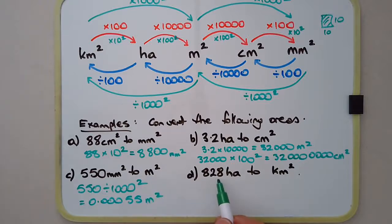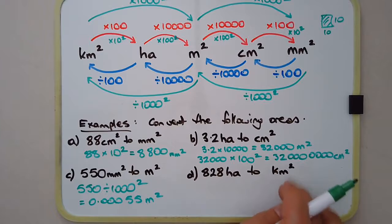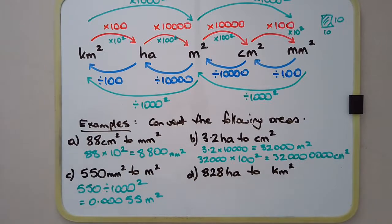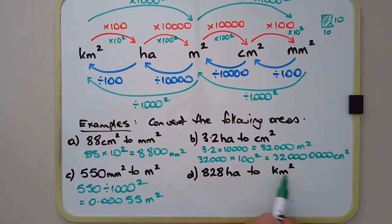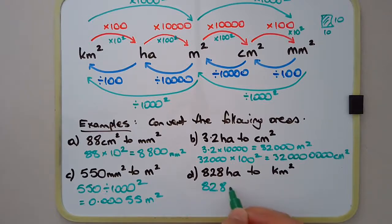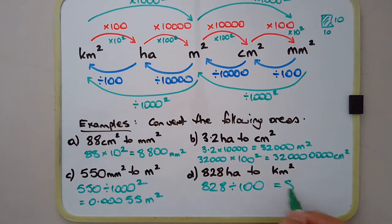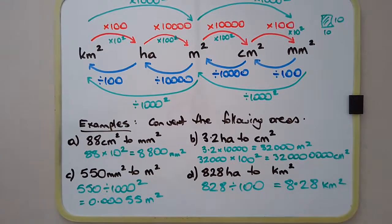The last example: convert 828 hectares to square kilometres. This is a common conversion when discussing large areas of land. We know there are 100 hectares in a square kilometre, so we divide by 100, or 10 squared. That gives us 8.28 square kilometres.